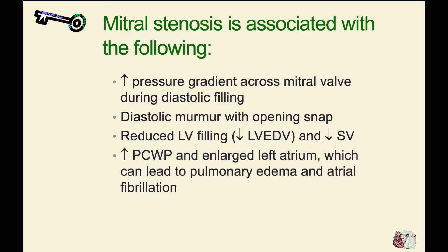To summarize, mitral stenosis is associated with an increase in pressure gradient across the mitral valve during diastolic filling, a diastolic murmur often with an opening snap, and reduced left ventricular filling — that is, a decrease in diastolic volume and stroke volume. This affects the Frank-Starling relationship: if you fill the heart with less blood, it does not contract as forcefully or as rapidly.